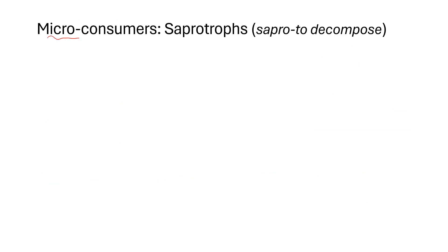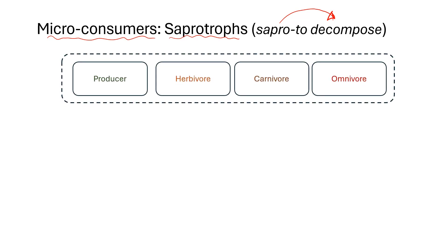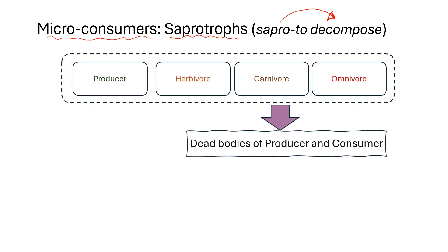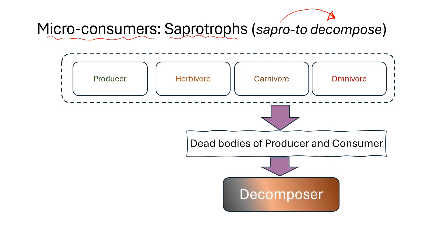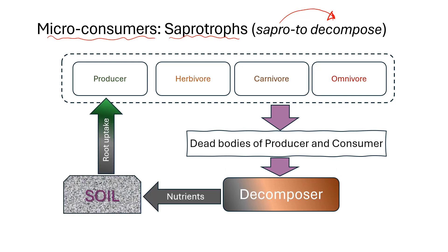Micro-consumers, or saprotrophs, are popularly known as decomposers — 'sapro' meaning to decompose. The dead bodies of producers and consumers are the food for these microorganisms. They decompose or break down dead organic matter and waste materials. Because of decomposition, essential nutrients return to the soil. This breakdown facilitates nutrient recycling, making essential elements available for uptake by plants and other organisms in the ecosystem.